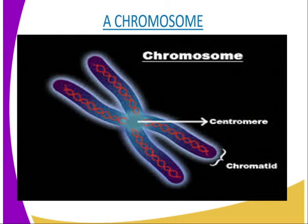Each chromosome is made up of two parallel strands called chromatids — in singular, a chromatid — as you can see from our screen. Each pair of chromatids is connected at one point by a structure known as the centromere, which is visible from our screen.